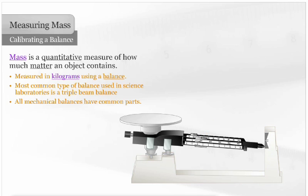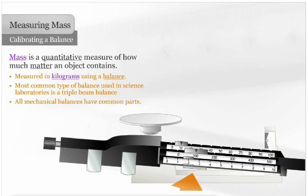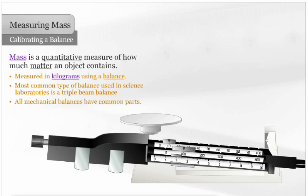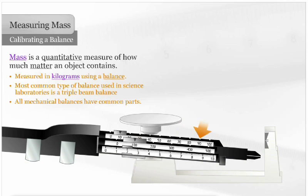A triple beam balance actually has three riders: 1 gram, 10 gram, and 100 gram. It also has notched beams, a pointer, and an indicator line.